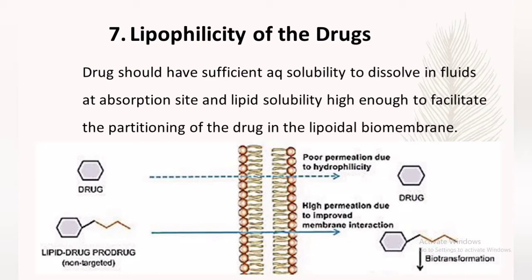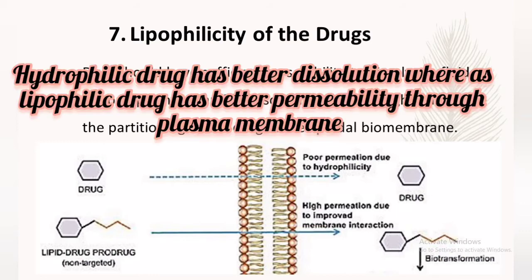The next physicochemical property affecting drug absorption is lipophilicity. A drug should have sufficient aqueous solubility to dissolve at the absorption site and lipid solubility high enough to facilitate partitioning into the lipoidal biomembrane. As seen in the picture, a hydrophilic drug cannot enter through the cell membrane, whereas a lipophilic prodrug can pass through easily, since the plasma membrane is made up of a lipid phosphate bilayer.